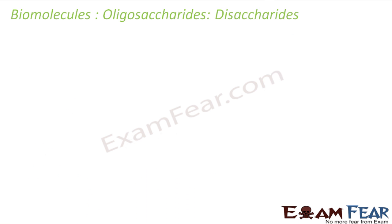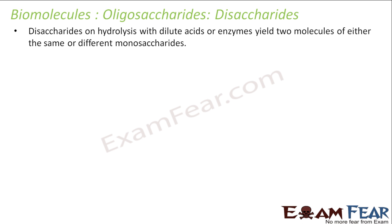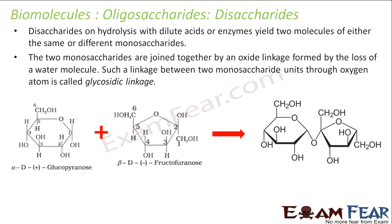Oligosaccharides include different types: disaccharides, trisaccharides, and so on. Disaccharides are the most popular and most important type, so let's discuss them in detail. On hydrolysis, disaccharides give two molecules of monosaccharides — they can be the same or different — and these monosaccharides are joined by an oxide linkage through the loss of a water molecule.